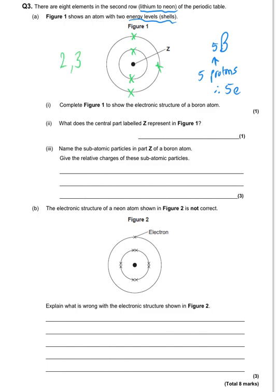The central part labelled Z is the nucleus. The question then asks: name the subatomic particles in part Z of the boron atom. Hopefully the earlier questions have helped — there is the proton and there is the neutron, and those are the two particles in the nucleus. You only get one mark for both names together. Then it says give the relative charges: the proton is positive, or you can write plus one, and the neutron is zero, or you could write neutral. This time you get one mark for each charge — one mark for plus one and one mark for zero or neutral.